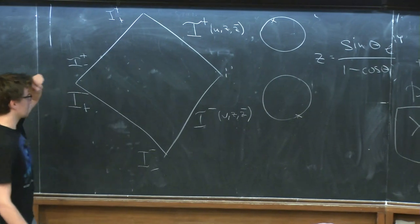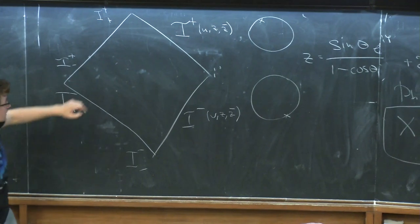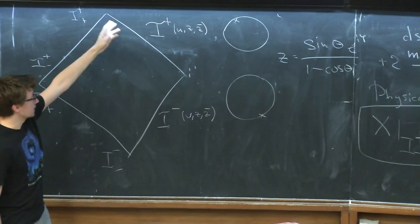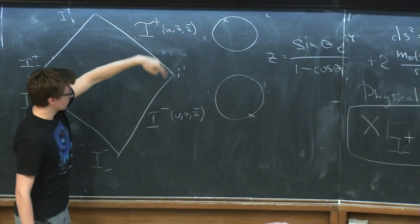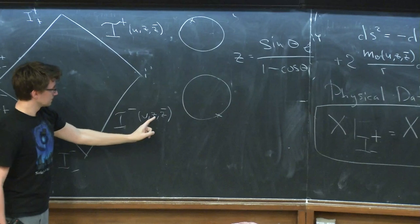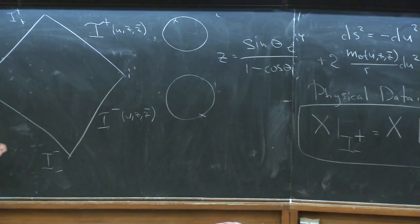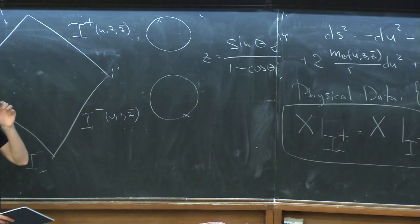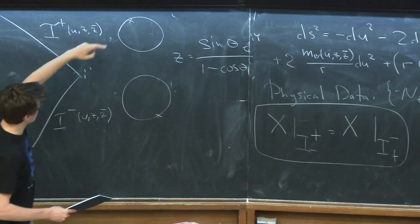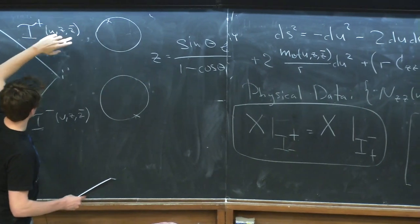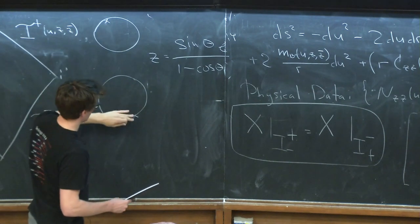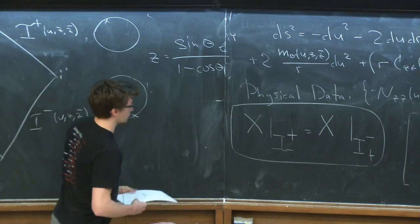Let me recall some names. This is a Penrose diagram of Minkowski space. It has null infinity where the light ends, called scri, scri plus, and scri minus. They are labeled by retarded time or advanced time, which runs along this edge, and a point on the sphere Z and Z-bar. In normal Minkowski coordinates, the same Z and Z-bar on scri plus and scri minus are antipodally matched — so if it's a north pole, that's a south pole.